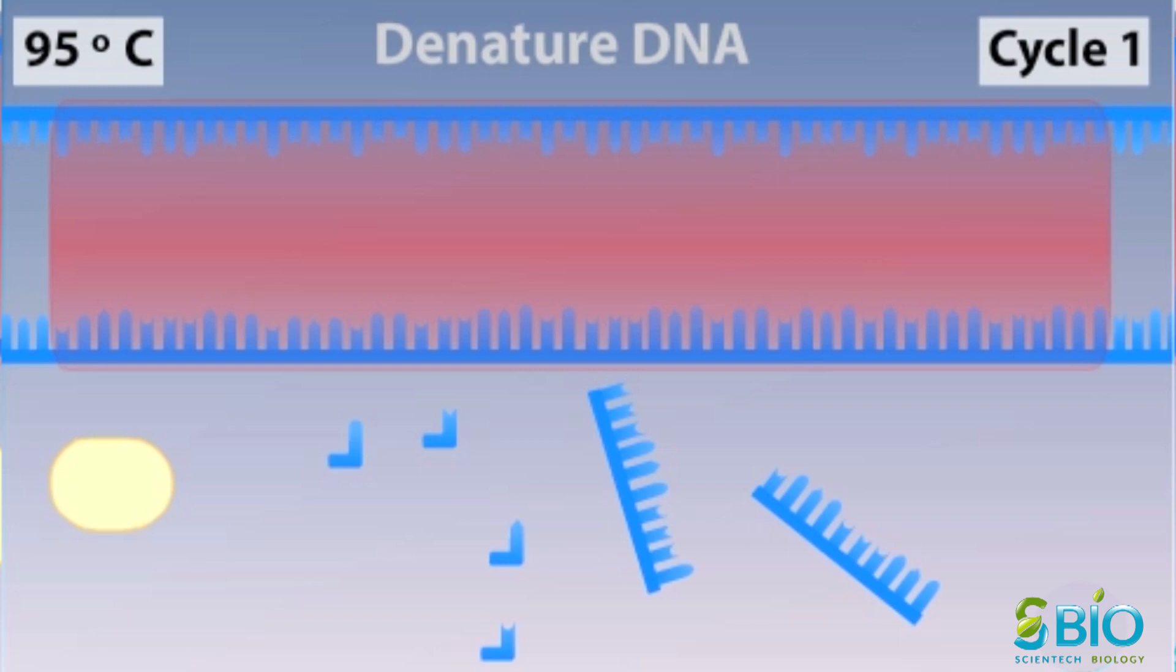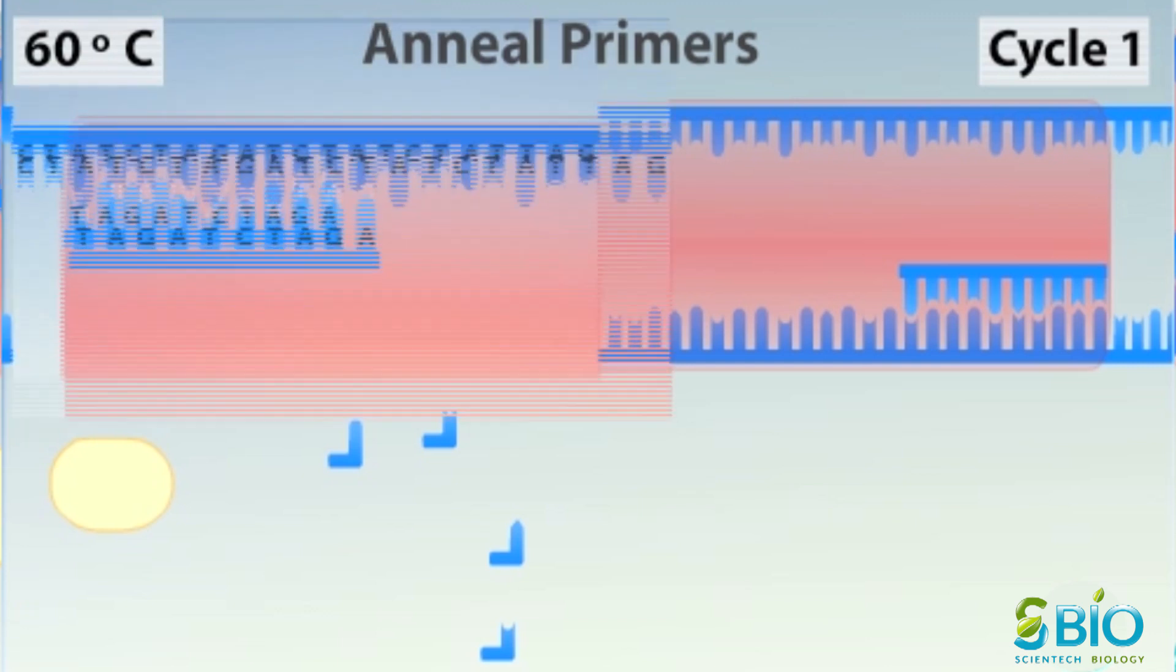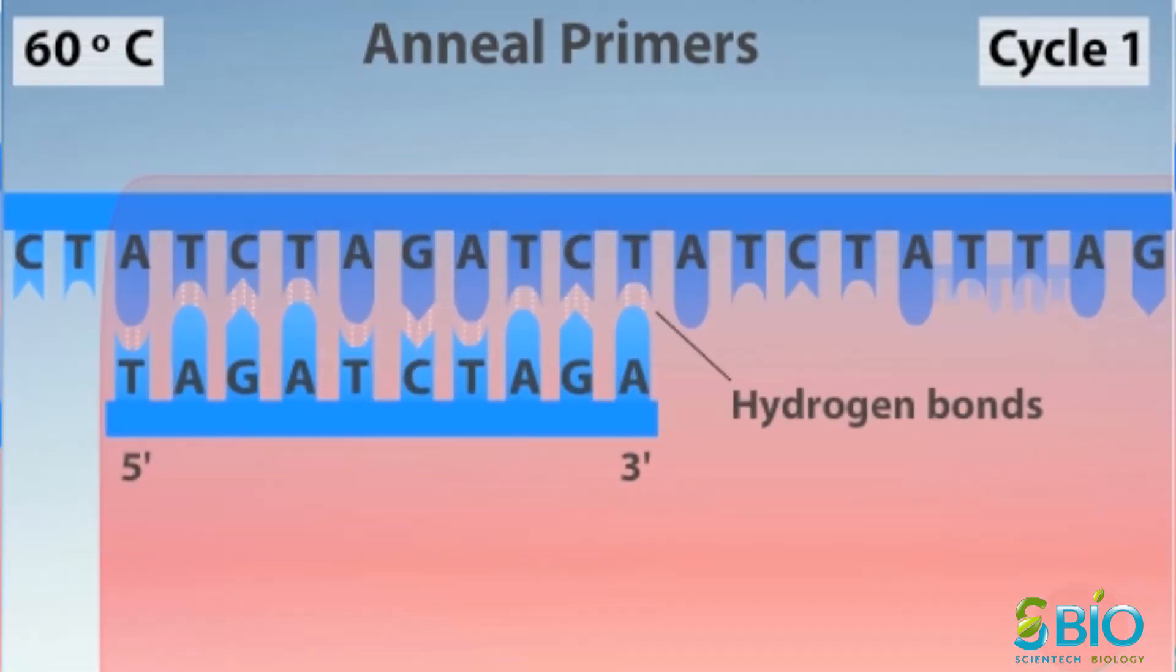After denaturing the DNA, the temperature is reduced to around 60 degrees so that the primers can form hydrogen bonds or anneal with their complementary sequences in the target DNA. Note that the primers and the target DNA follow base pairing rules. An adenine A pairs with thymine T, and a cytosine C pairs with guanine G.